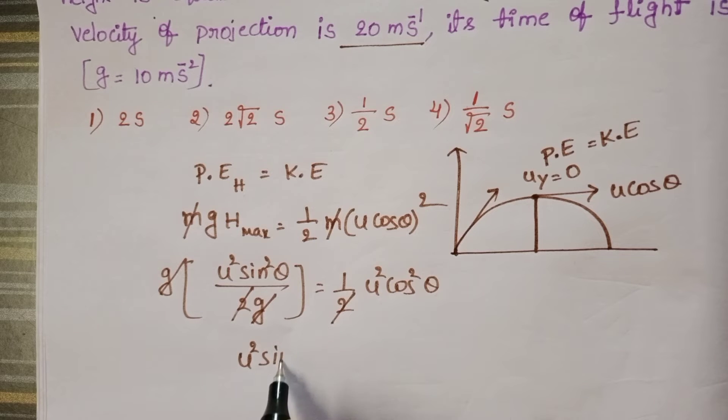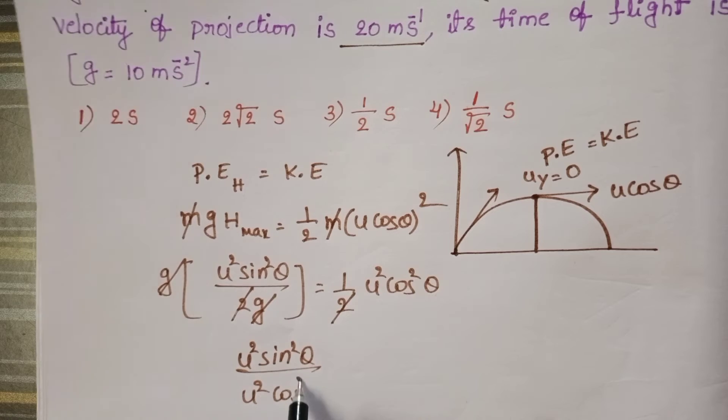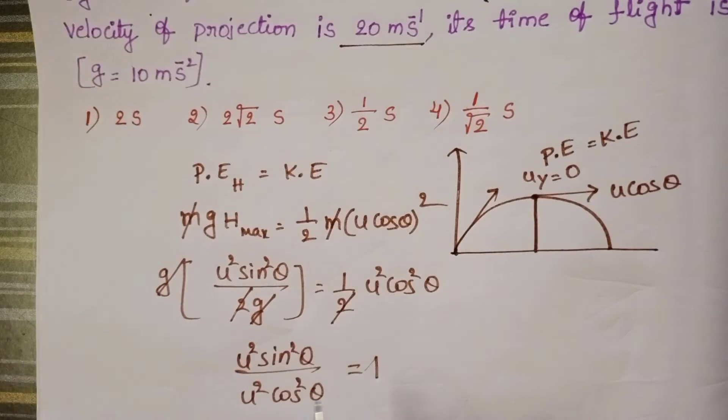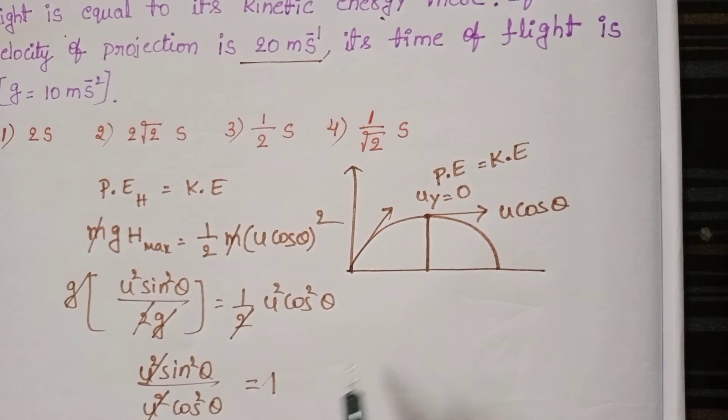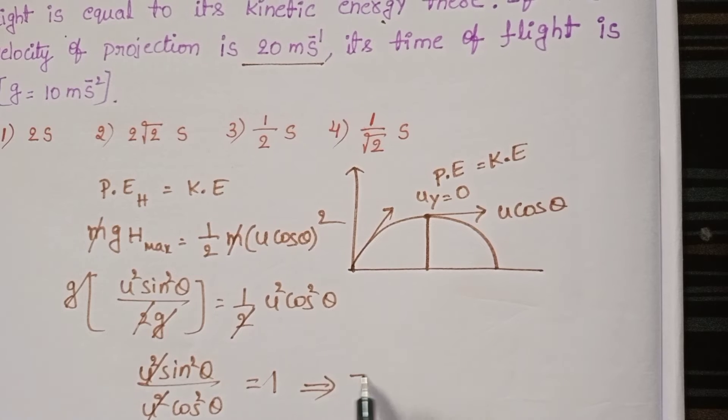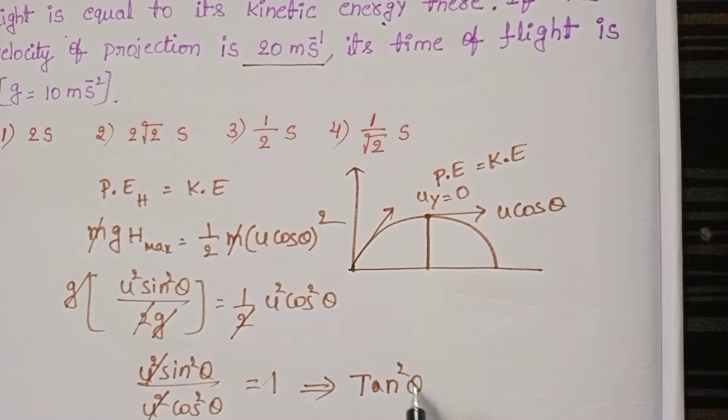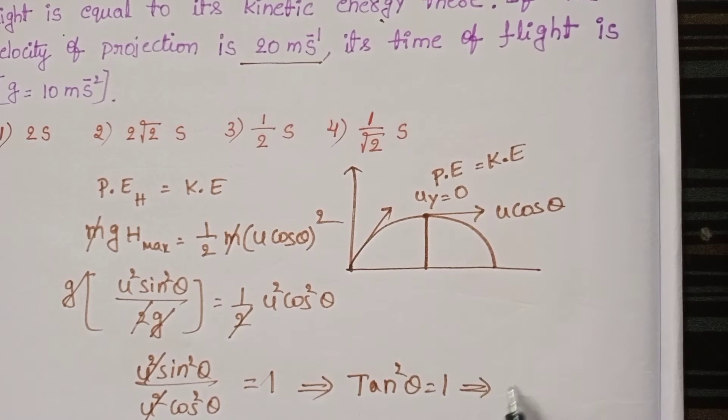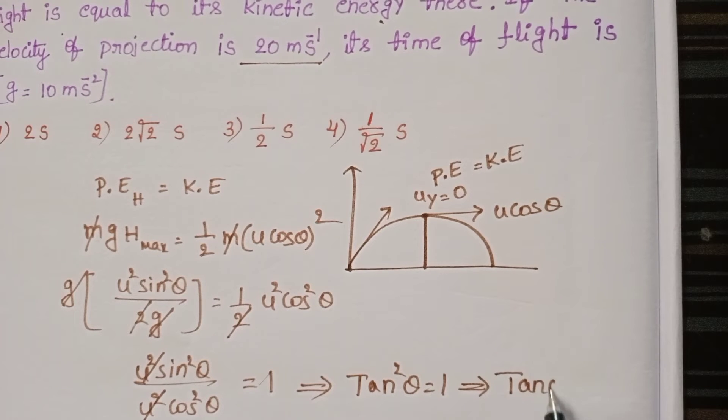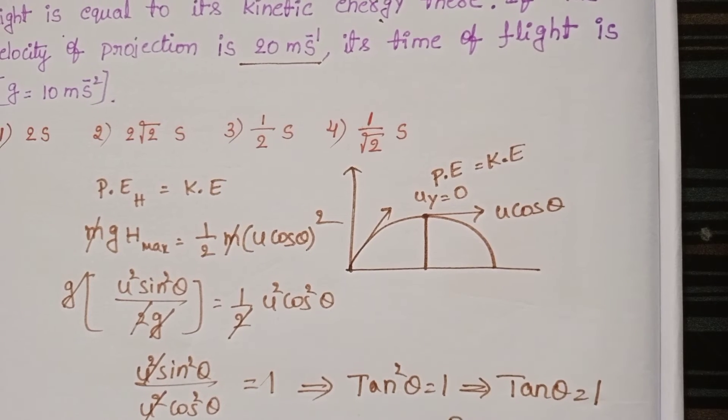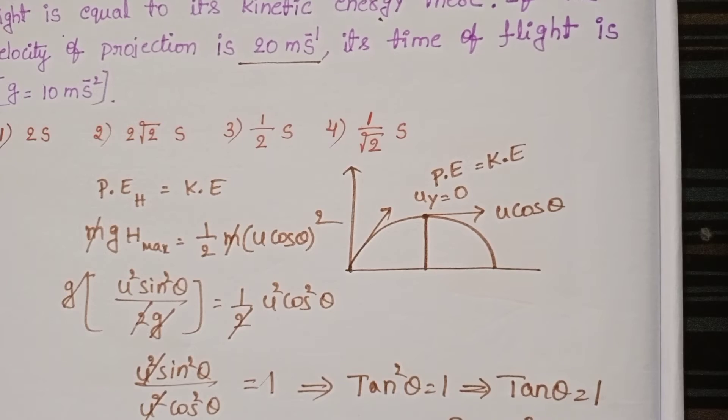From this, u² sin² θ / u² cos² θ equals 1. u² cancels out, giving tan² θ equals 1. Therefore, tan θ equals 1, so θ equals 45 degrees.